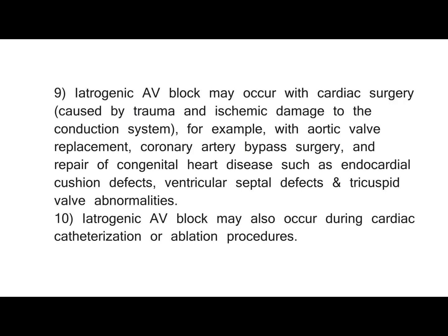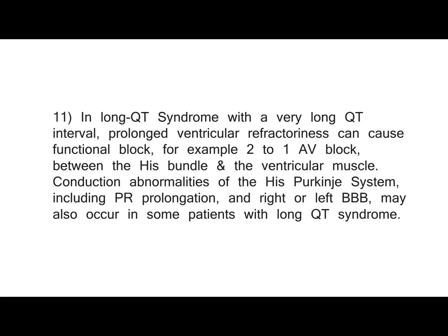Iatrogenic AV block may occur with cardiac surgery, caused by trauma and ischemic damage to the conduction system — for example, with aortic valve replacement, coronary artery bypass surgery, and repair of congenital heart disease such as endocardial cushion defects, ventricular septal defects, and tricuspid valve abnormalities. Iatrogenic AV block may also occur during cardiac catheterization or ablation procedures. In long QT syndrome with a very long QT interval, prolonged ventricular refractoriness can cause functional block, for example 2-to-1 AV block between the His bundle and the ventricular muscle. Conduction abnormalities of the His-Purkinje system, including PR prolongation and right or left bundle branch block, may also occur in some patients with long QT syndrome.